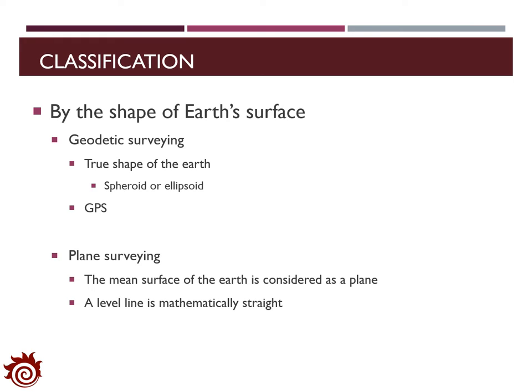Based on the shape of the Earth's surface, we can define two types of survey. The first one is the geodetic survey, which uses the true shape of the Earth — spheroid, ellipsoid, or the geoid Earth's surface. One popular technology for geodetic survey is GPS, which uses the true shape of the Earth to determine distances and elevations at any point on Earth. The second one is the plane survey. In this kind of survey, we assume that the mean surface of the Earth is considered as a plane. This is not quite realistic for a large region, but for smaller areas it is approximately right, and we assume that a level line is mathematically straight.